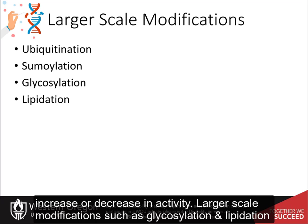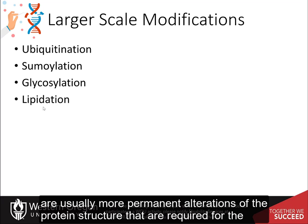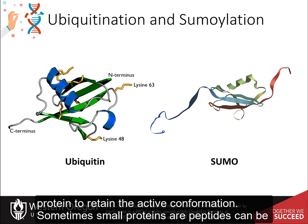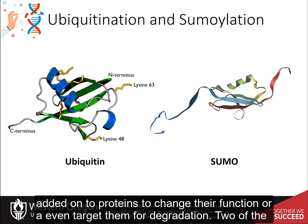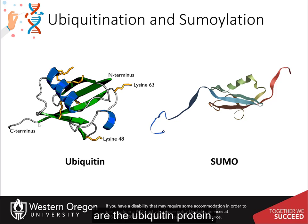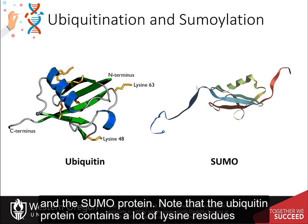Larger-scale modifications, such as glycosylation and lipidation, are usually more permanent alterations of protein structure that are required for the protein to retain its active conformation. Sometimes, small proteins or peptides can be added onto proteins to change their function or even target them for degradation.